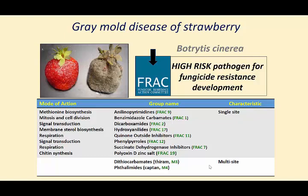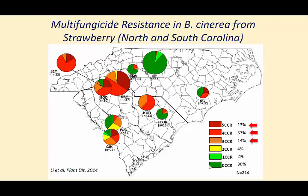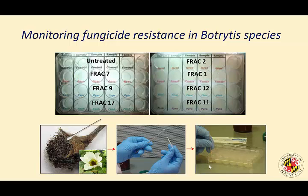A few years ago, we conducted a survey to look at resistance issues in Botrytis isolates from different strawberry fields in the Carolinas. We found multi-fungicide resistance in Botrytis isolates from different strawberry fields. Some farms had more resistance issues, others had less. CCR stands for chemical class resistance — 5CCR means an individual isolate is resistant to five different chemical classes of fungicides. So it's a multi-fungicide resistant isolate.